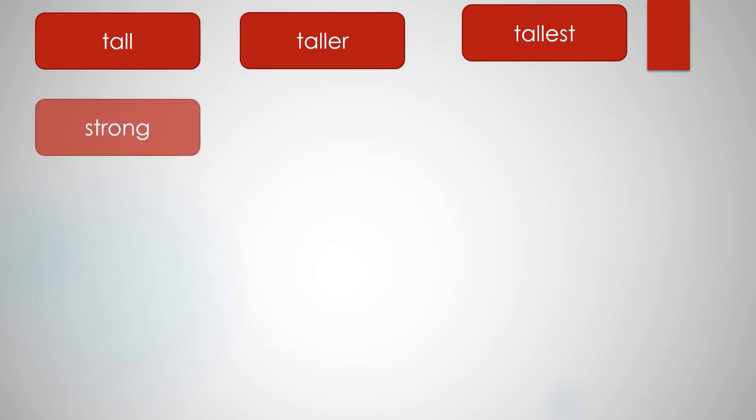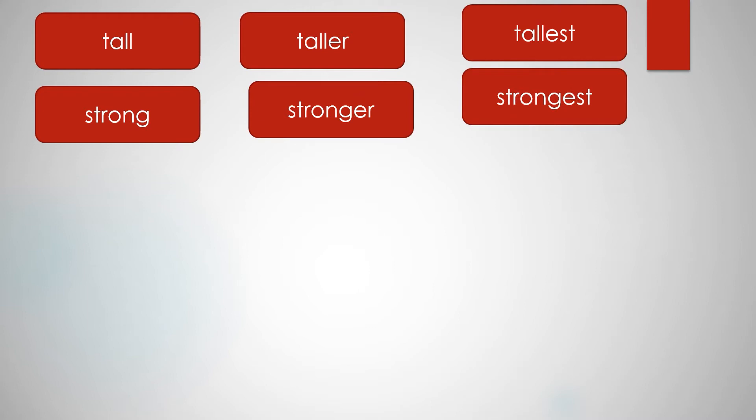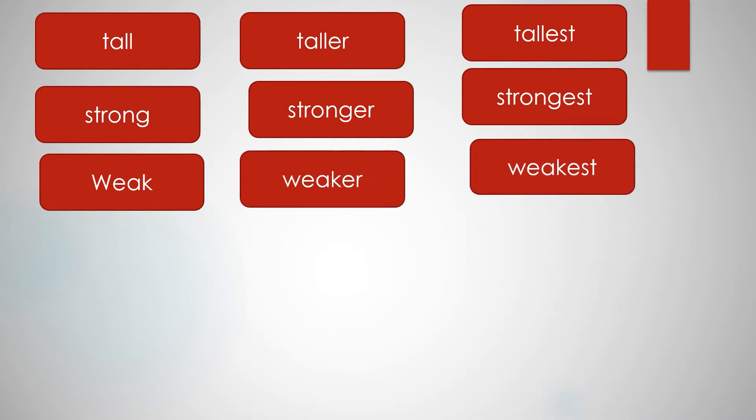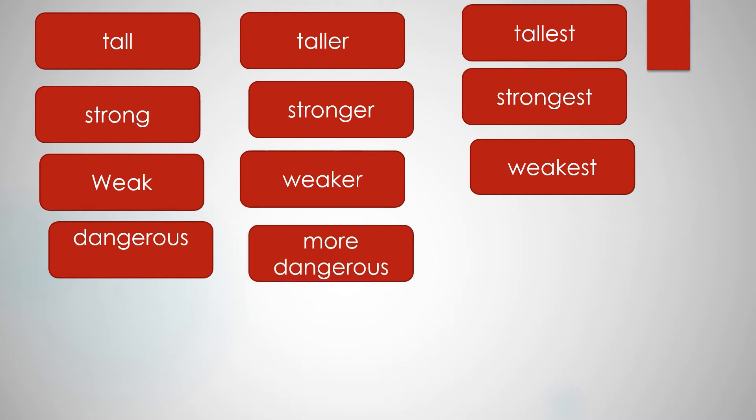And so on: strong, stronger, strongest. We said dangerous - long adjectives. So how do we get the comparative? We put the adjective between 'more' and 'than', or we precede the adjective with 'more'. More dangerous. The lion is more dangerous than the wolf. The most dangerous.